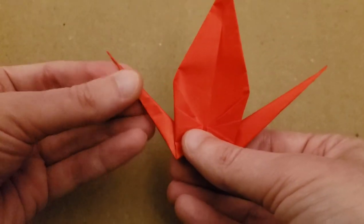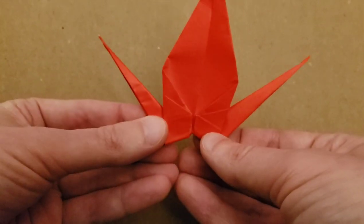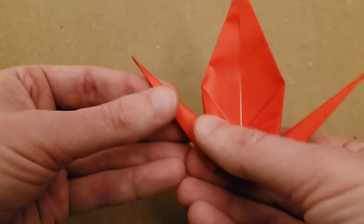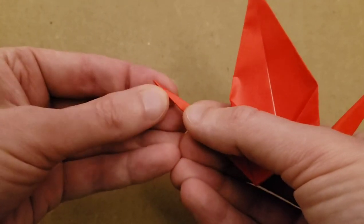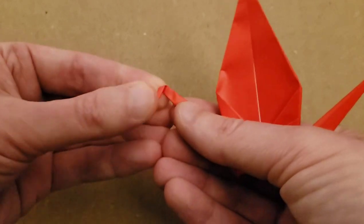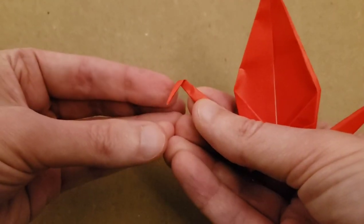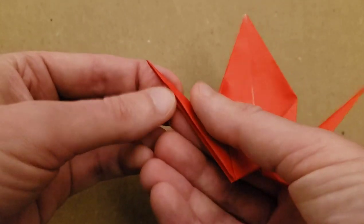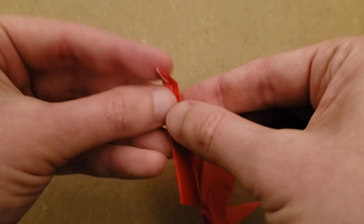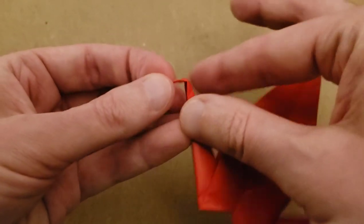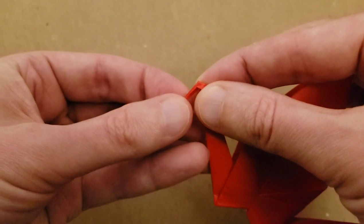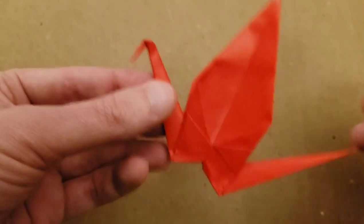All right. So now you want to decide which one you want to be the head and which one the tail. I think I want this one here to be the head. So I'm going to do something very similarly. So just taking a little bit from the top and fold it down. And then open. And then opening the neck, if you will, we're going to sort of fold this down and again pinch, just like we did before. So fold it down and then pinch. And there's the head.